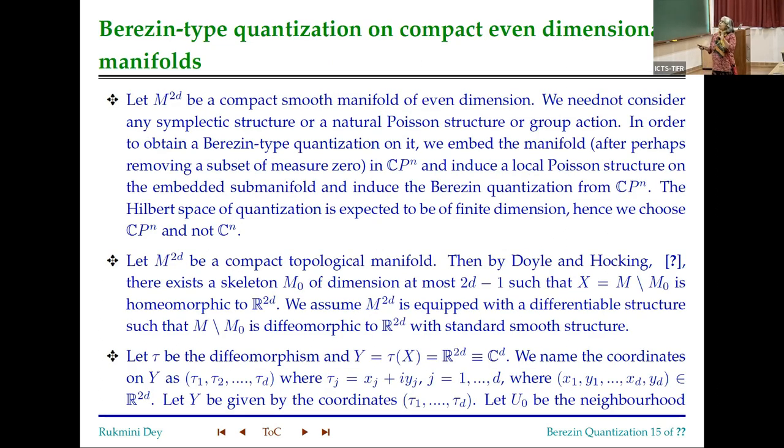Now, how do we, what do we do? We are going to take that as the quantization, Berezin quantization of CP^N as our model. And what we are going to do is, you have a two-dimensional manifold. And what we are going to do is, we are going to leave out some measure zero set embedded in CP^N and induce the local Poisson structure and the quantization from CP^N. And if you expect the Hilbert space to be actually infinite dimensional, then instead of CP^N, you embed it in C^N and induce it from C^N. CP^N is actually almost like C^N, except it's compact. And in many senses it mimics C^N.